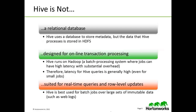Hive is not a relational database. Hive does use a relational database to store its own metadata, but the data that Hive processes is stored in the distributed file system. Hive is not designed for online transaction processing. Hive runs on Hadoop, which itself is a batch processing system where jobs can have high latency with substantial overhead. Therefore, latency for Hive queries is generally high, even for small jobs.